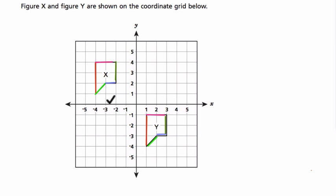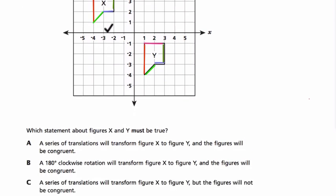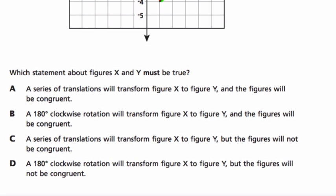Now let's look at the question and see what they're asking us. Which statement about figures X and Y must be true? A series of translations will transform figure X to figure Y. Well, boom, there it is. And the figures will be congruent, right? What's going on here?